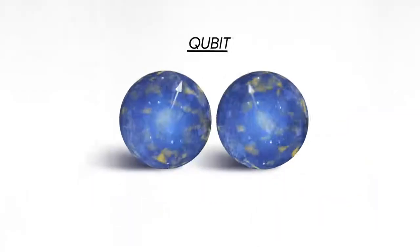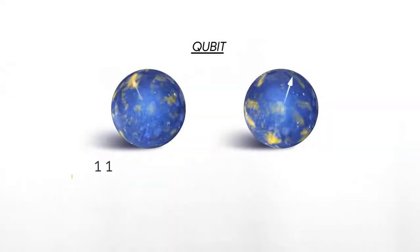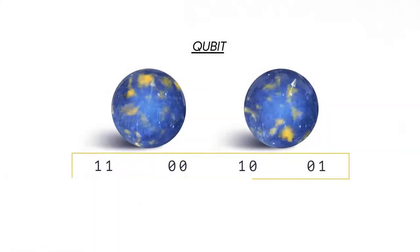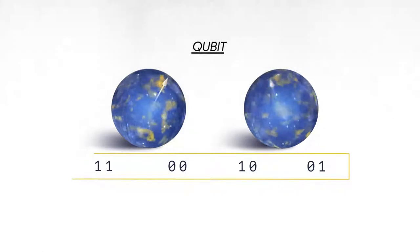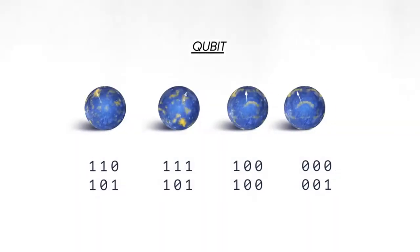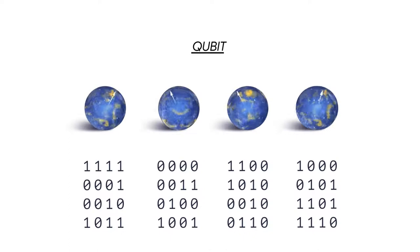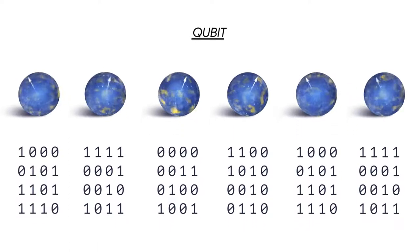If you have two quantum bits, then there are four possible states that you can put in superposition. With three qubits it's eight, four qubits it's 16 — it grows exponentially.